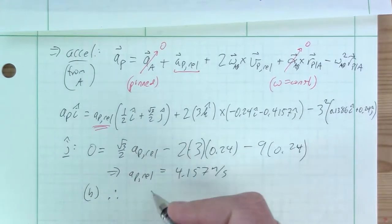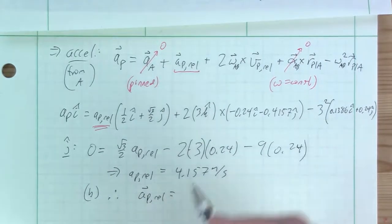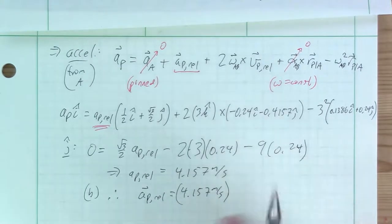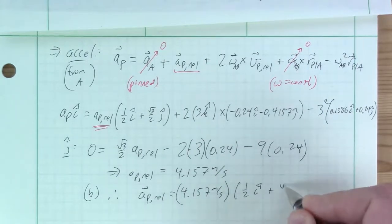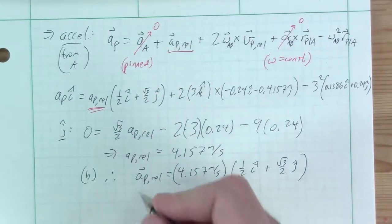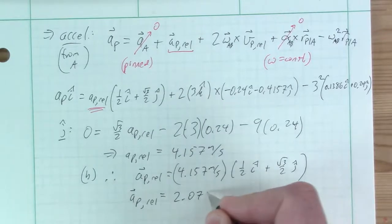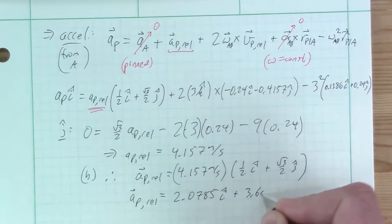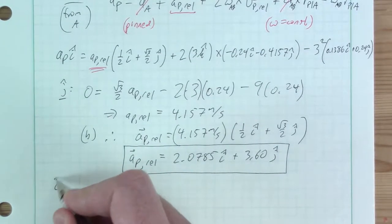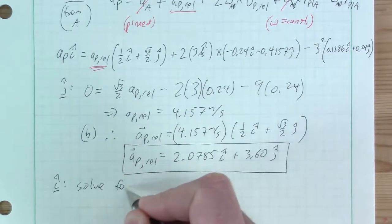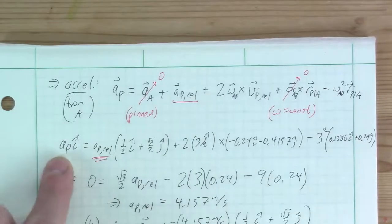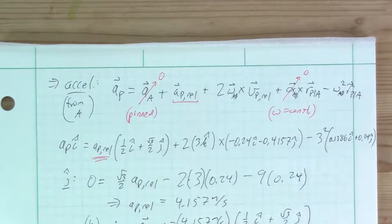The final answer for relative acceleration is 2.0785 i-hat plus 3.60 j-hat meters per second squared. We won't fully work through it here, but you could then use this to solve for a_P in the i-hat direction — since a_P is only in i-hat, plugging in the i-hat components of everything would let you solve for that quantity now that we know a_{P_rel}.